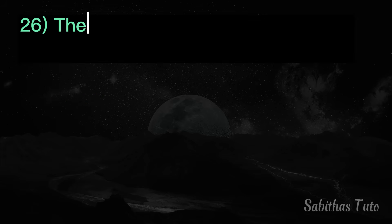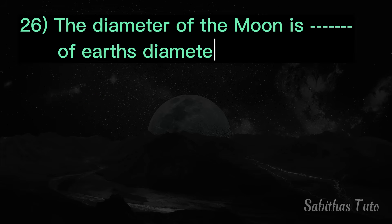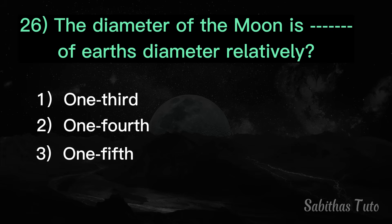Twenty-sixth question. The diameter of the moon is what fraction of earth's diameter? The answer is one-fourth.